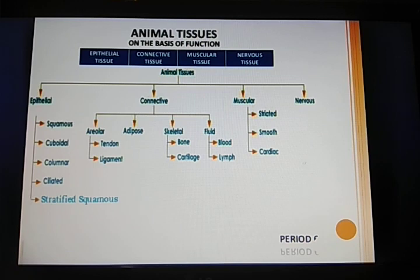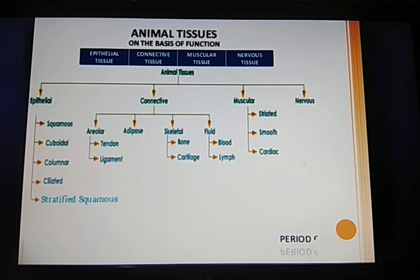Animal tissue comprises 4 categories: epithelial tissue, connective tissue, muscular tissue, and nervous tissue. Epithelial tissue is of 5 categories: squamous epithelium, cuboidal epithelium, columnar epithelium, ciliated epithelium, and stratified squamous epithelium.